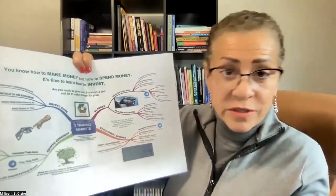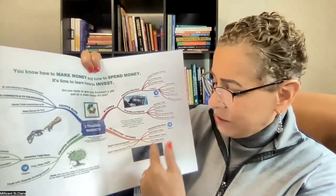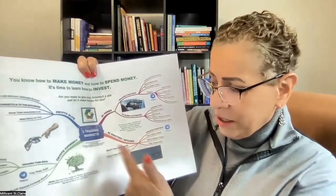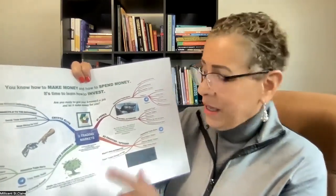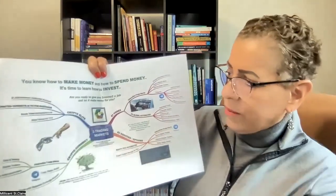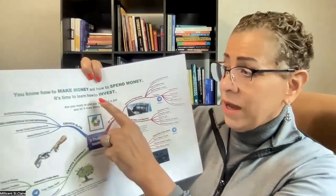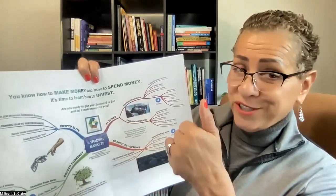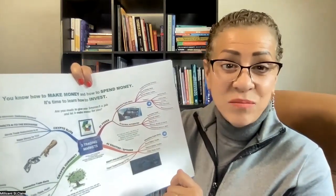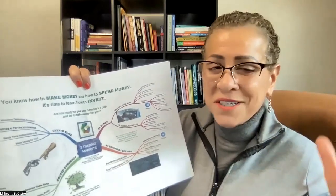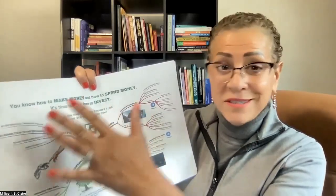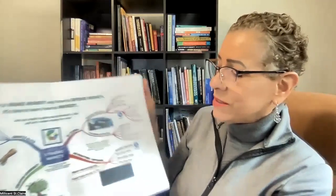The three trading markets: the foreign exchange market — currencies from all over the world; equities and options in the stock market; and then crypto, which is the new kid on the block. As you can see, I've got lots of detail based on what I learned. We know how to make money and we know how to spend it — the thing is, it's time to learn how to invest it properly. Not just the traditional methods, but with crypto there's a whole new world opening up.